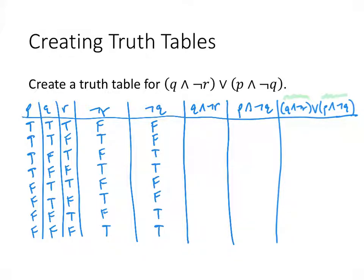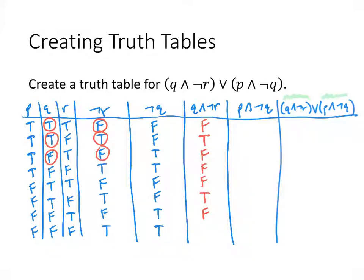For Q ∧ ¬R, we look at the Q and NOT R columns together. AND is only true when both pieces are true. Row by row: T∧F=F, T∧T=T, F∧F=F, F∧T=F, T∧F=F, T∧T=T, F∧F=F, F∧T=F — giving F T F F F T F F.